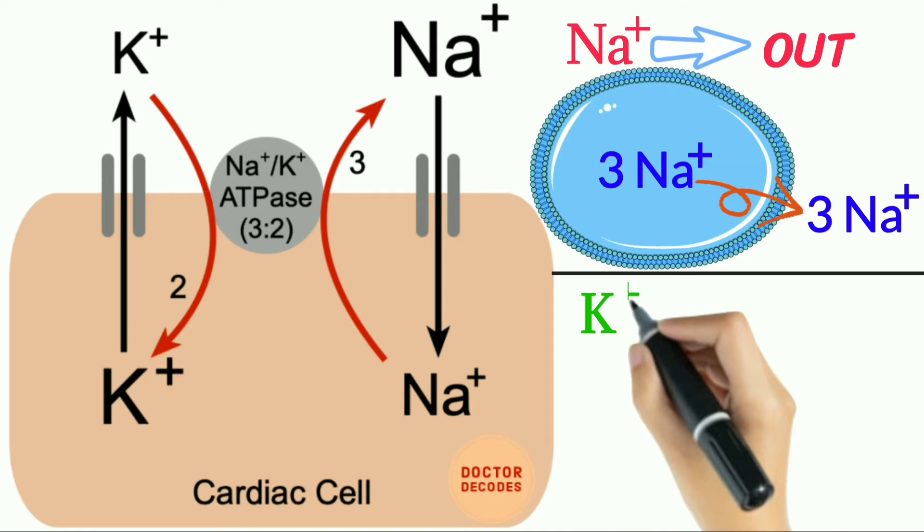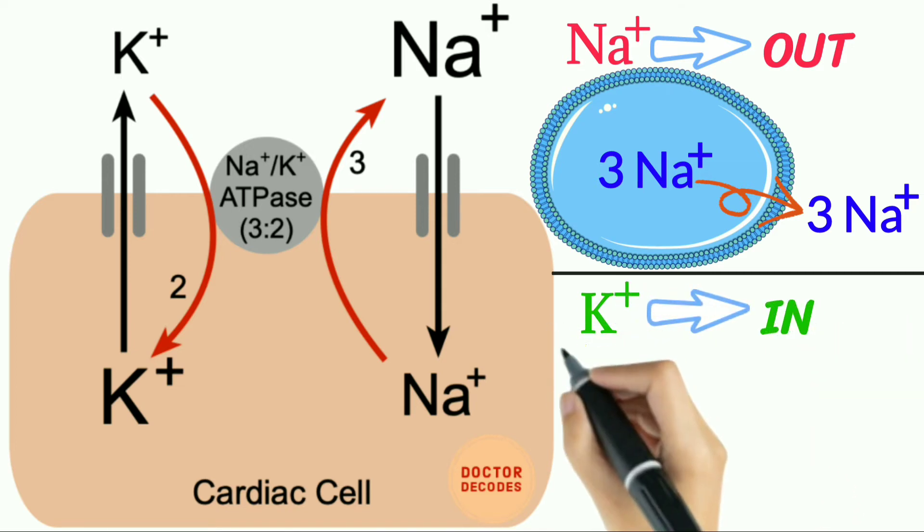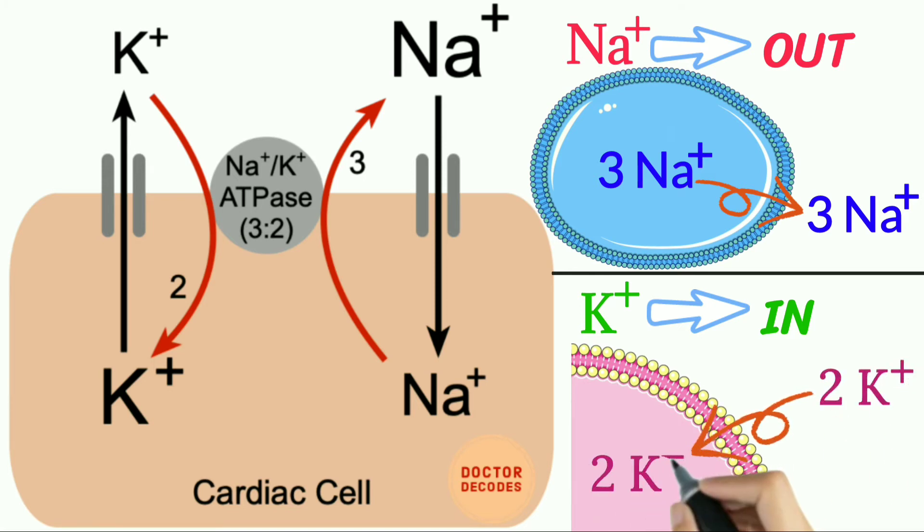Similarly, potassium comes in and in has only two characters. Hence be sure that this pump moves two potassium ions into the cell. So it actually exchanges sodium ions for potassium ions, and that's how the pump works.